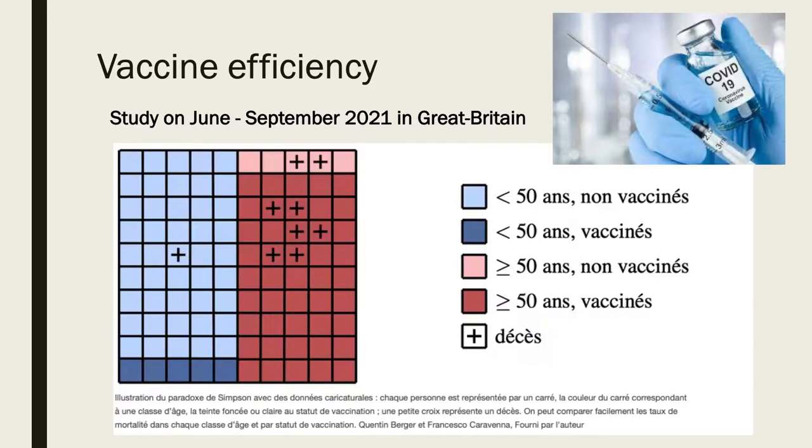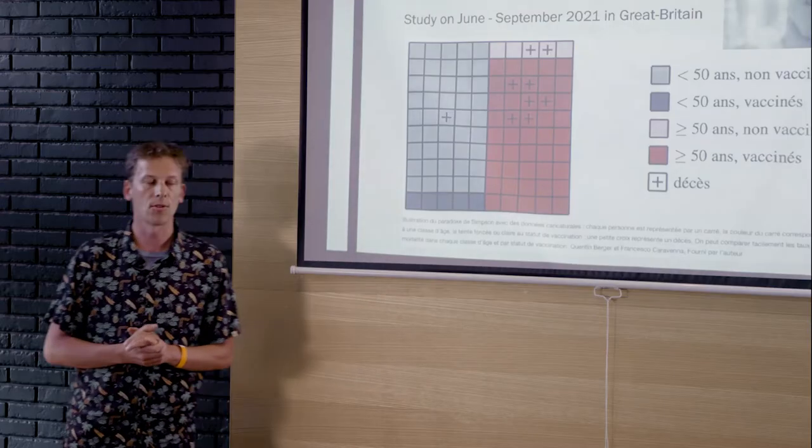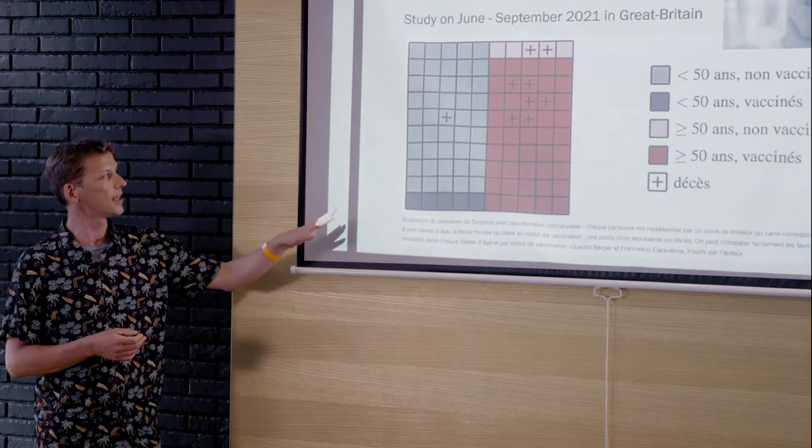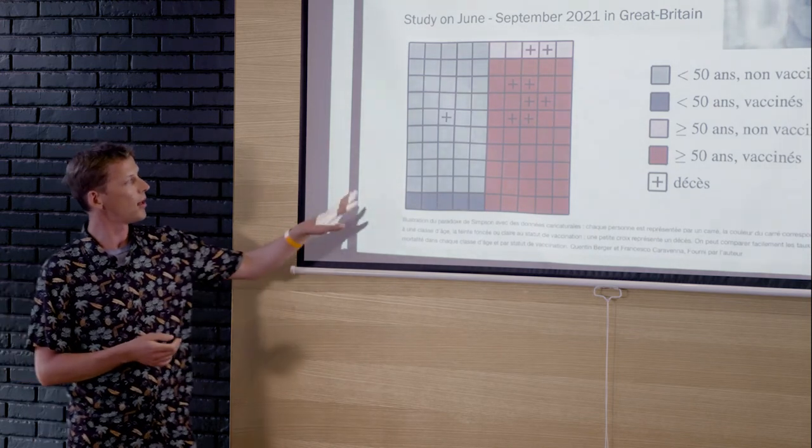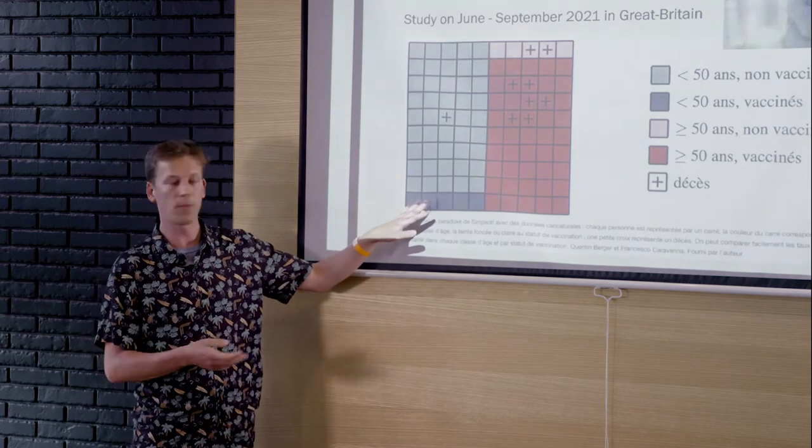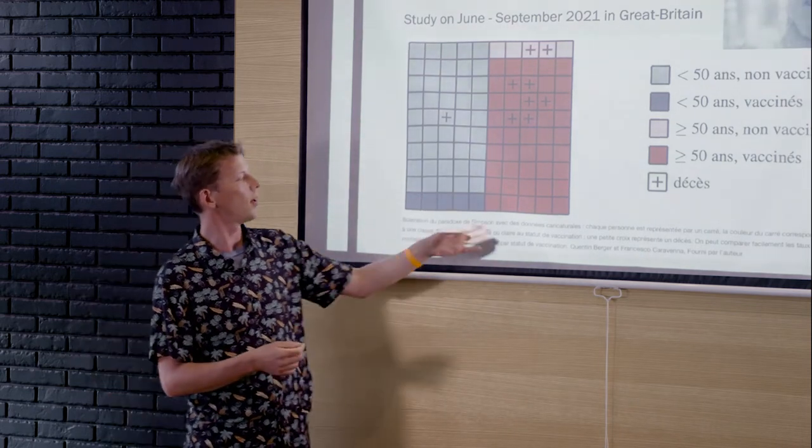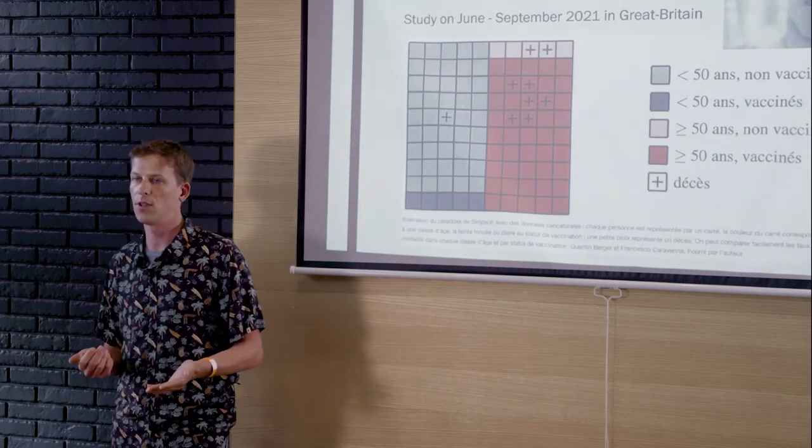Last example, recent stuff, right, COVID vaccine. And here, I'm going to play with data a little bit more. So here you have this example where I'm going to explain a little bit. On the left, you have young people in blue, people less than 50 years old, and older people on the right in red, which are over 50 years old.